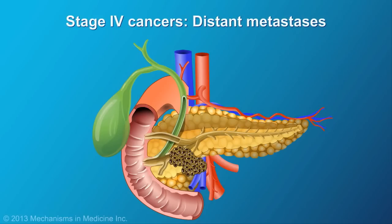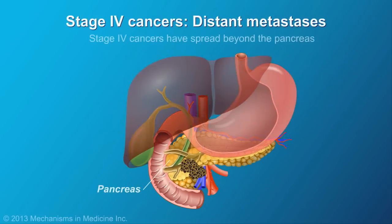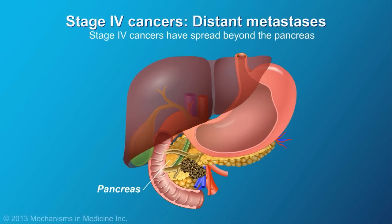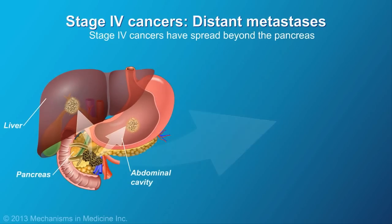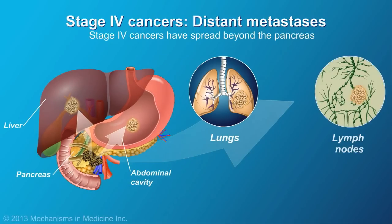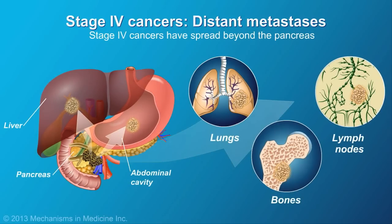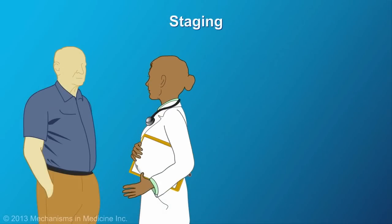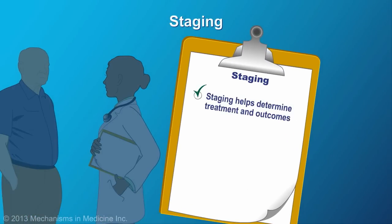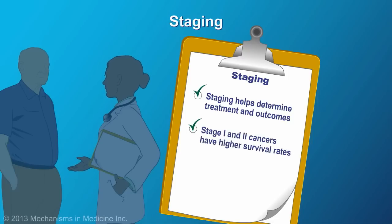In stage 4, the cancer has spread to other organs, most commonly the liver or the inner lining of the abdominal cavity, the lungs, lymph nodes, or more rarely, the bones. Staging helps doctors determine which treatment approach to take, and it also relates to outcomes. Survival rates are higher with stage 1 and 2 disease.